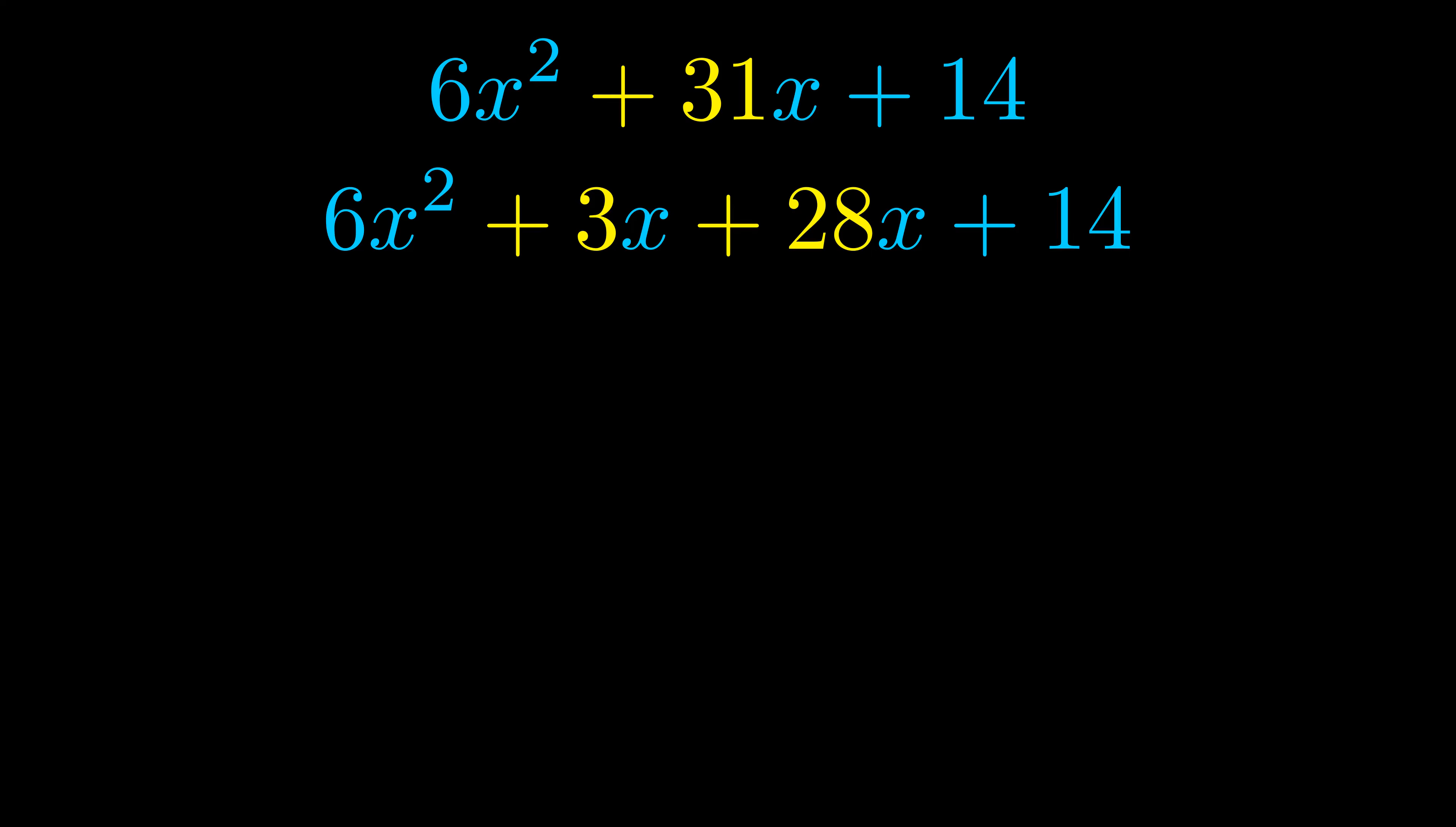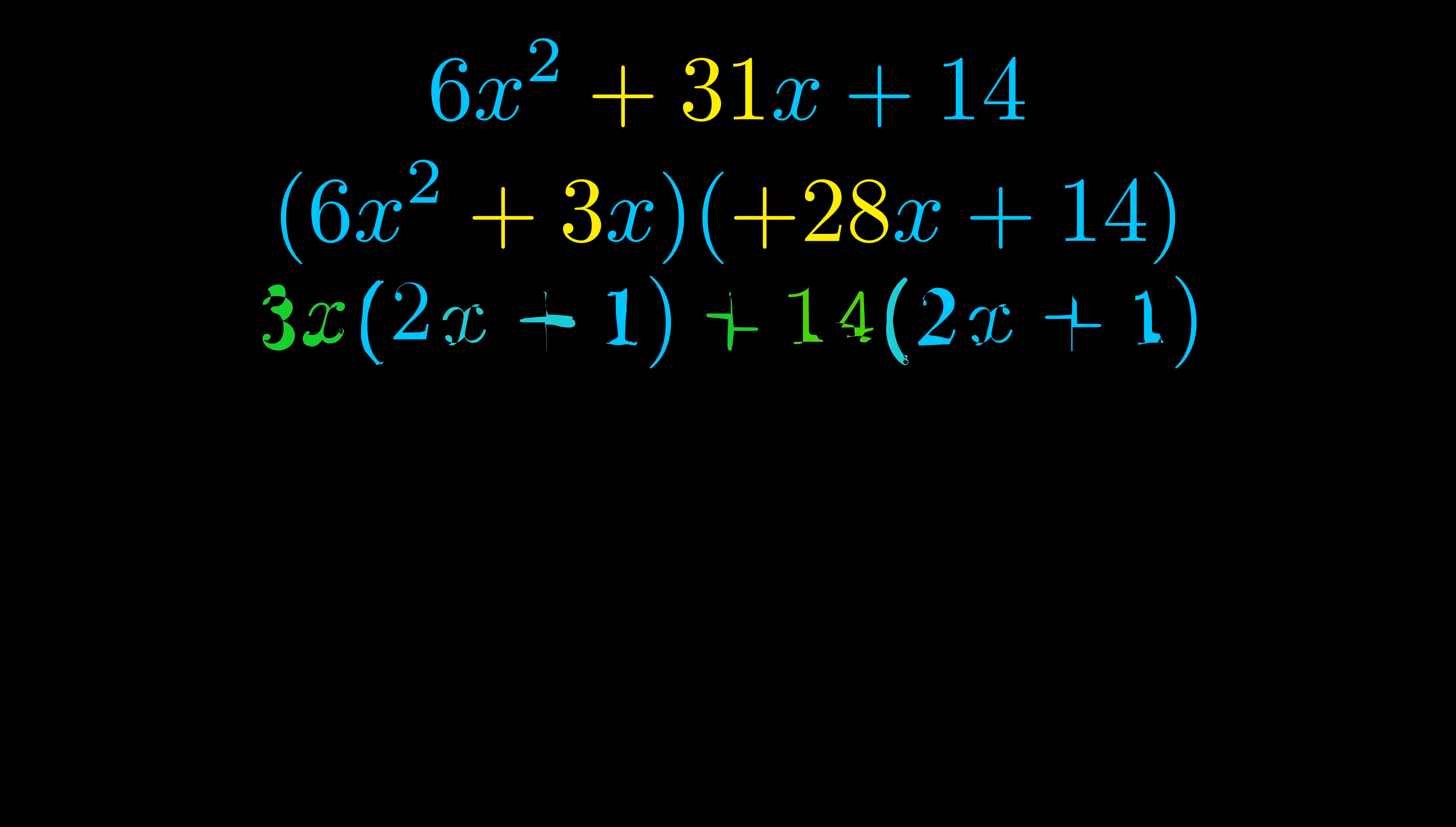Once we've done this we go ahead and we put parentheses around the first term and the last term and we do that so that we can take the greatest common factor out of both terms. We can see the greatest common factor is now outside in green.